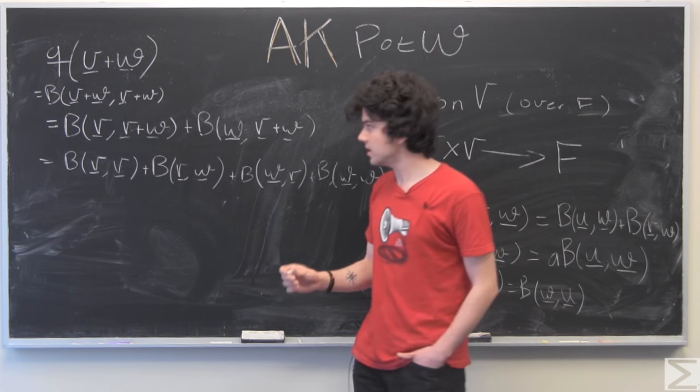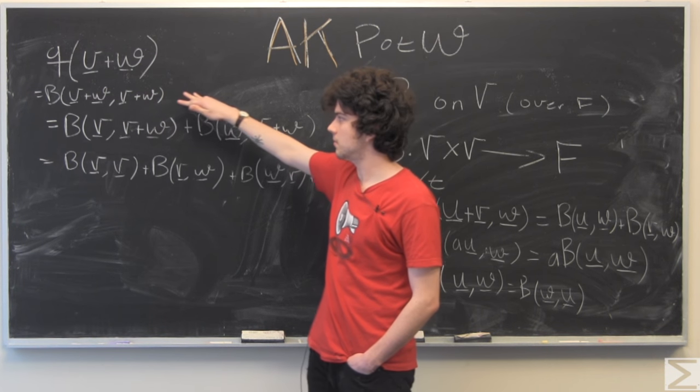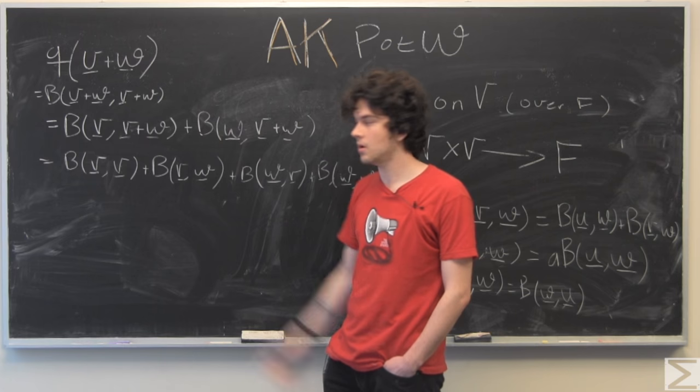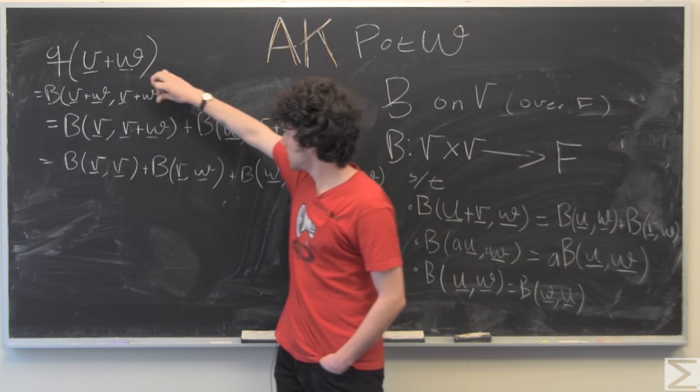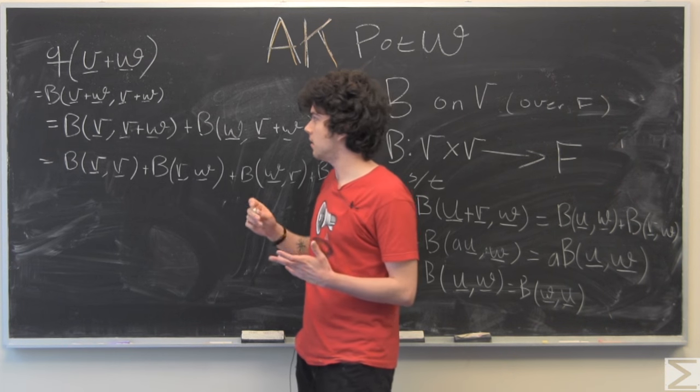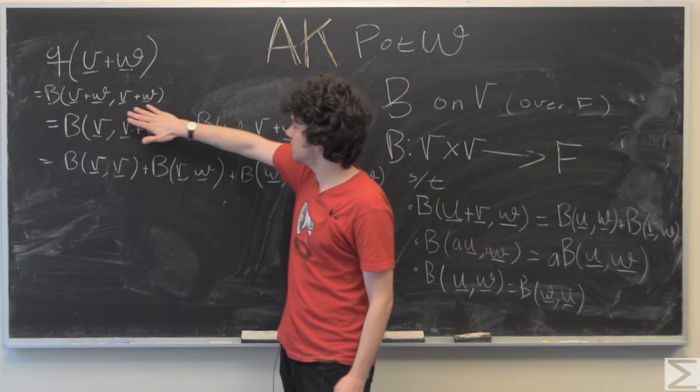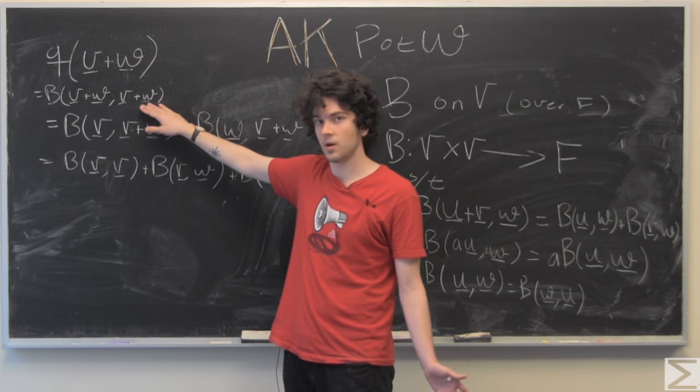So what I've done here is taken the definition of our quadratic form and written it as a bilinear form. So this is a bilinear form of our vectors, which is V plus W. And we can break this up, so we know this is just one vector.